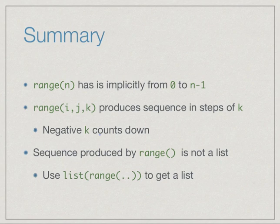Also, we can use a third argument which is a step in order to produce sequences which proceed in steps i, i+k, i+2k and so on. And in particular, if k is a negative step, then we can produce decreasing sequences.